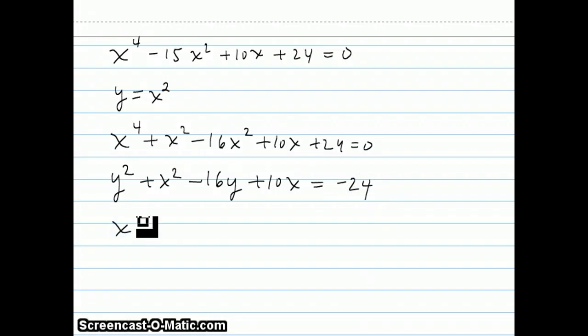Now we can do completing the square. x squared plus 10x is, I was right, x squared plus 10x. We need to add 25 to this, to complete this square. Plus y squared minus 16y plus 64. And on this other side, I also have to add the 25 and the 64.